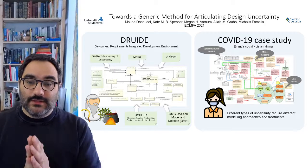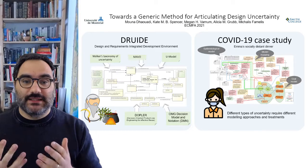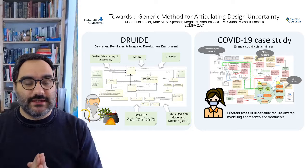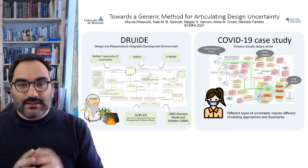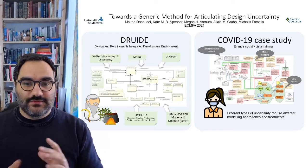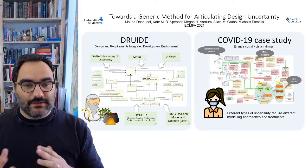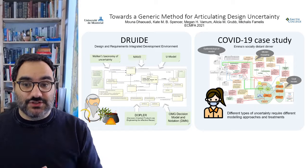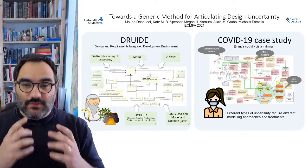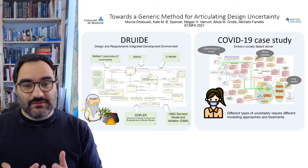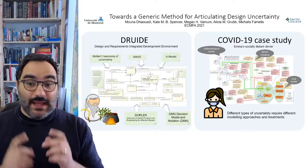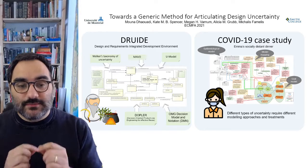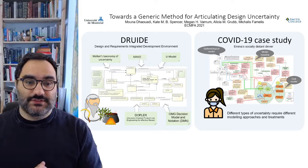To evaluate Druid's effectiveness we conducted a case study on a scenario from the COVID-19 pandemic. In the case study we explored the different kinds of uncertainty that can be found across heterogeneous models as well as in their relationships. We found that Druid is effective for articulating design uncertainty and we showed that different types of uncertainty need different modelling approaches and treatments.